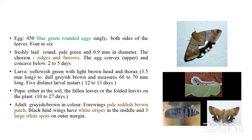The newly hatched caterpillar is yellowish green in color with a light brown head and thorax, measuring about 3.5 mm long. The fully grown larva is dull grayish in color and about 60 to 70 mm long. There are five distinct larval instars.